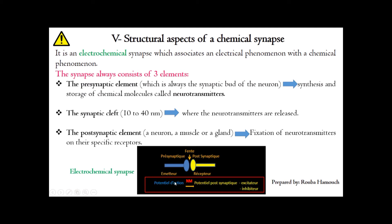That is why the synapse is called electrochemical: the message starts electrical, is transformed into a chemical message, and then into an electrical message again.